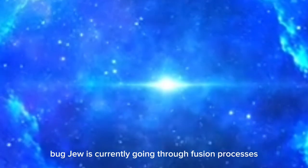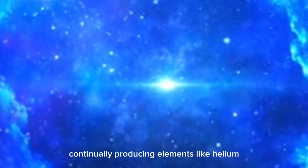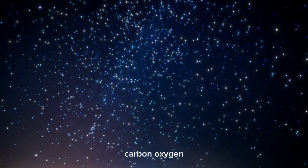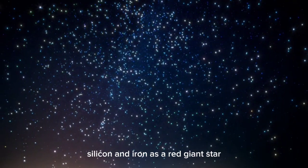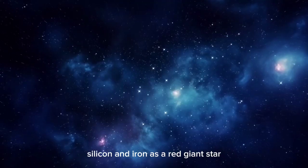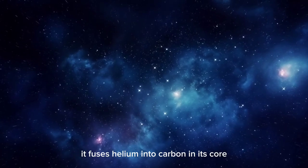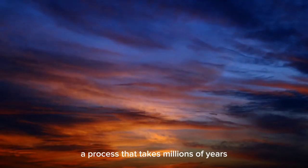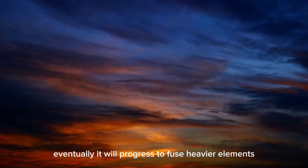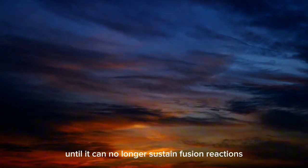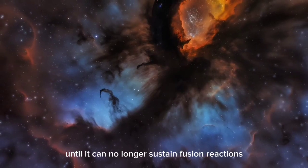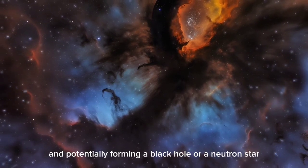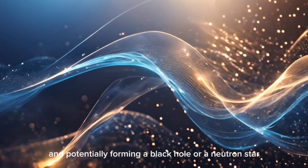Betelgeuse is currently going through fusion processes, continually producing elements like helium, carbon, oxygen, silicon, and iron. As a red giant star, it fuses helium into carbon in its core, a process that takes millions of years. Eventually, it will progress to fuse heavier elements until it can no longer sustain fusion reactions, leading to gravitational collapse and potentially forming a black hole or a neutron star.